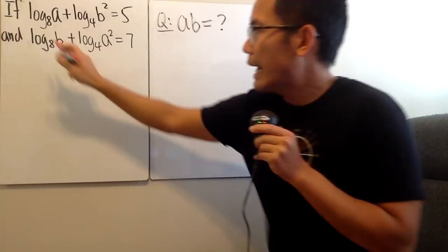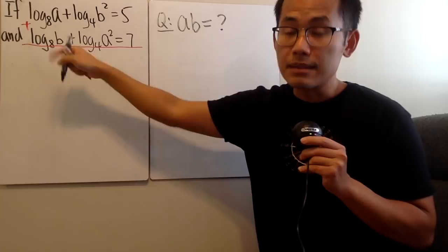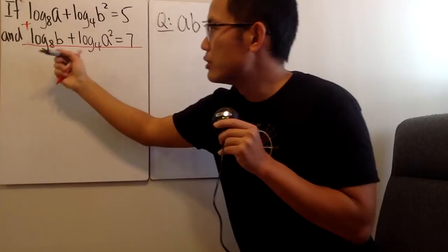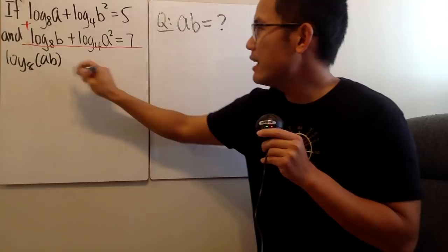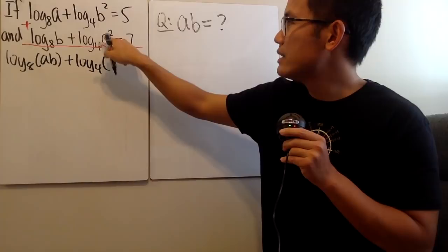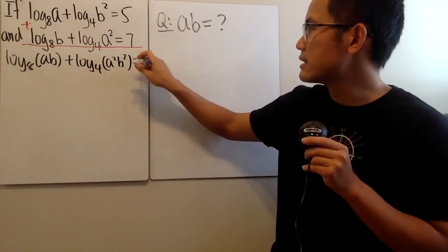It's a good idea to just add up the equations, and you will see that this plus that, because they have the same base, you can just multiply the inside. So this is going to be log base 8 of A times B. Next, we add log base 4, and I will write down A squared times B squared, and that's equal to five plus seven, which is equal to 12.